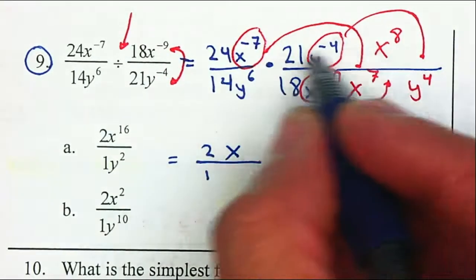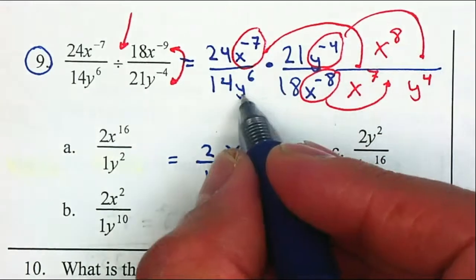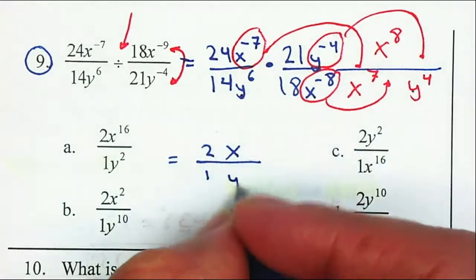For the y's, there are no y's on the numerator. So I just have 6 and 4 more for a total of 10.